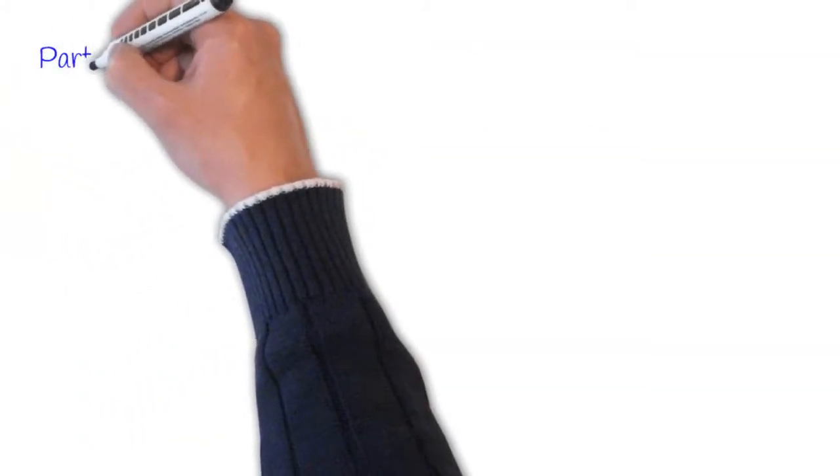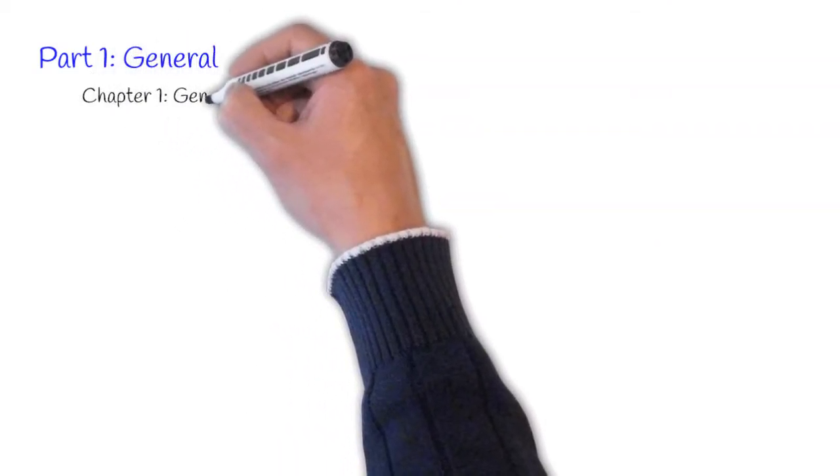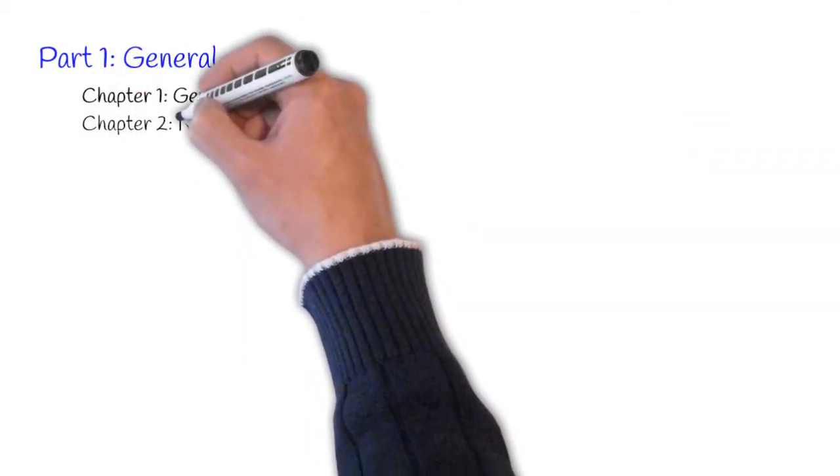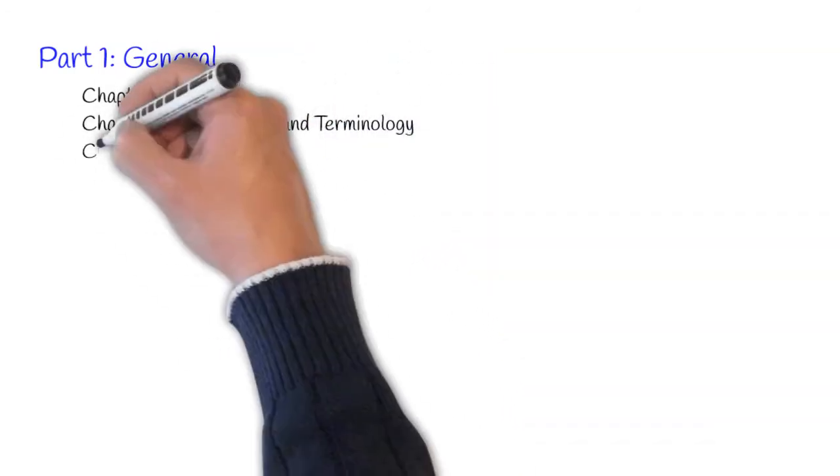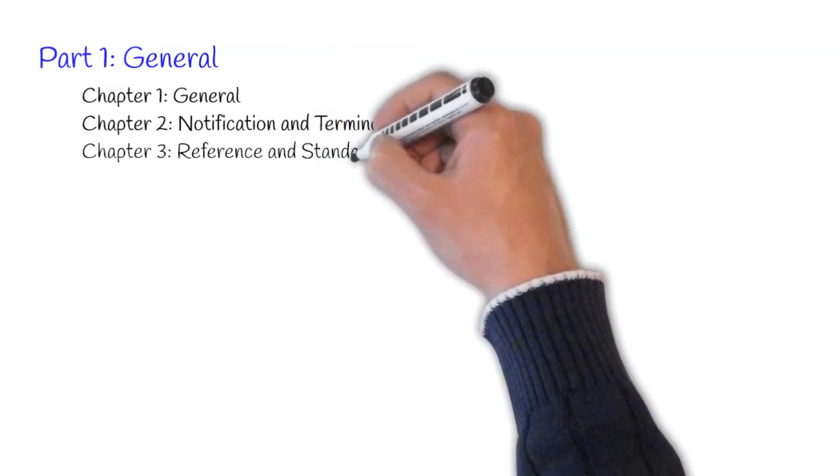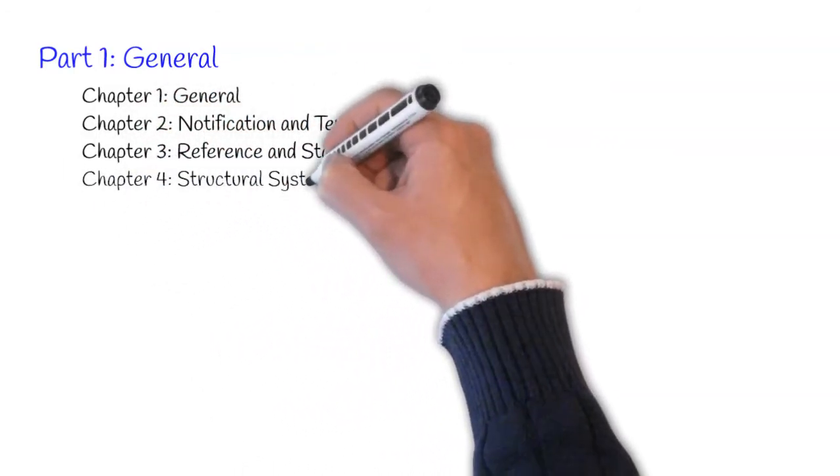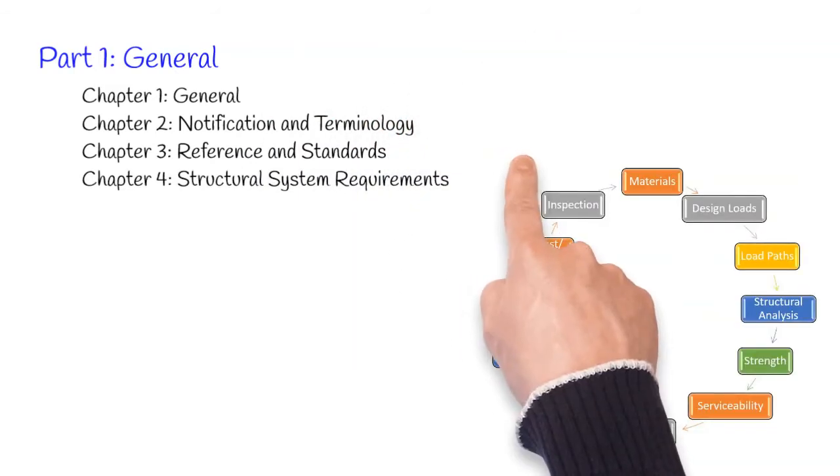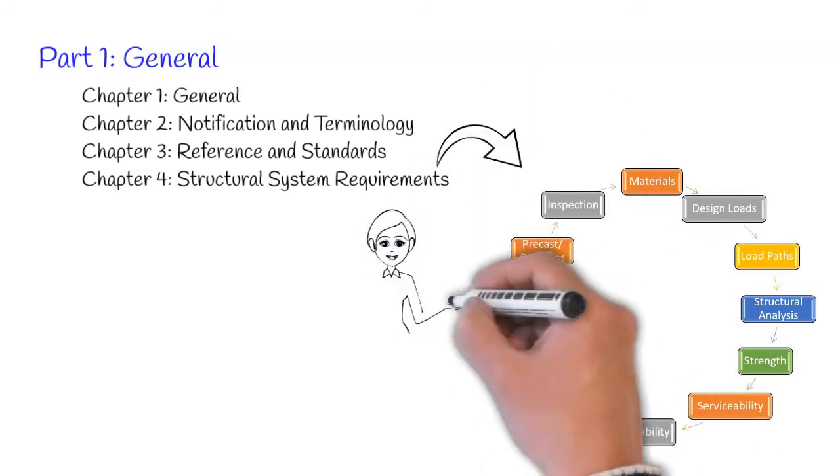In Part 1, Chapter 1 General includes the overall scope of the code. If you need the definition of a variable, then come to Chapter 2 Notation and Terminology. Chapter 3 Referenced Standards includes reference to codes and standards outside of the ACI 318. The real roadmap of the code begins at Chapter 4 Structural System Requirements, which refers to other different sections of the code and covers most of the details.